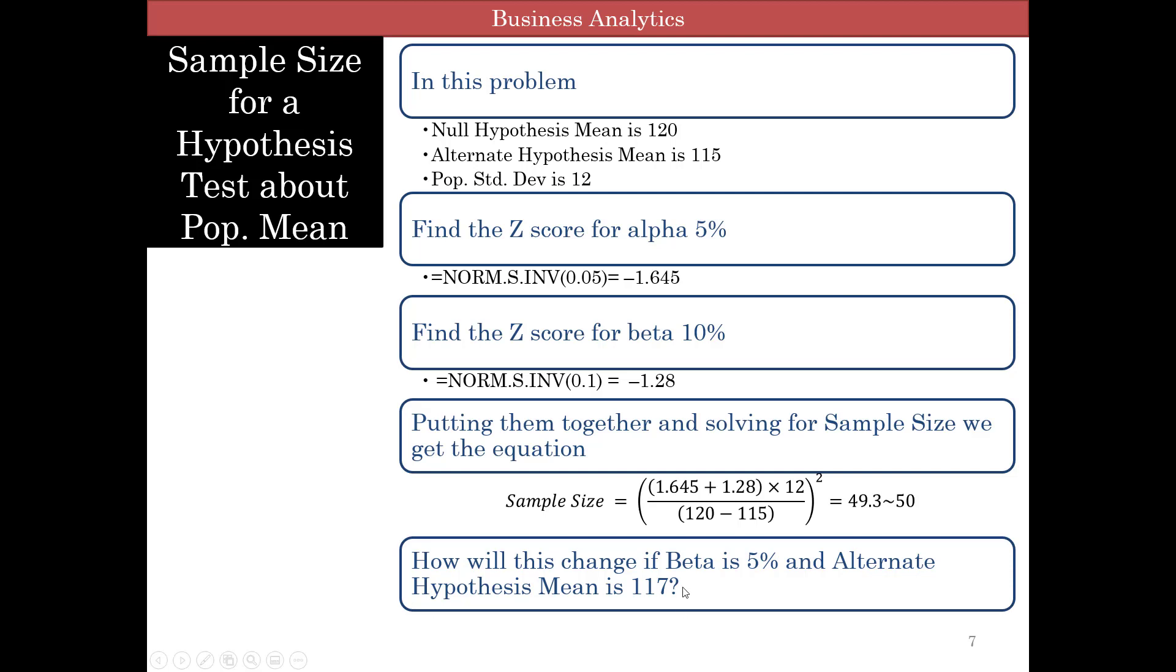We can look at changing this by changing the beta and alternate hypothesis mean to different values, and you can look at what your sample size should be. The difference between your null hypothesis mean and alternate hypothesis mean is really your effect size. The larger this difference is, the less a sample size you need. If you have a very large difference, you need a very small sample to show the difference.